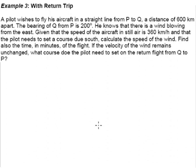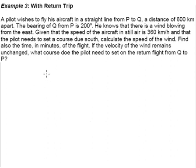Example 3 is a question with a return trip. A pilot wishes to fly his aircraft in a straight line from P to Q, a distance of 600 km apart. The bearing of Q from P is 200 degrees. The first thing you may want to do is of course to have a good idea of where P and Q are.